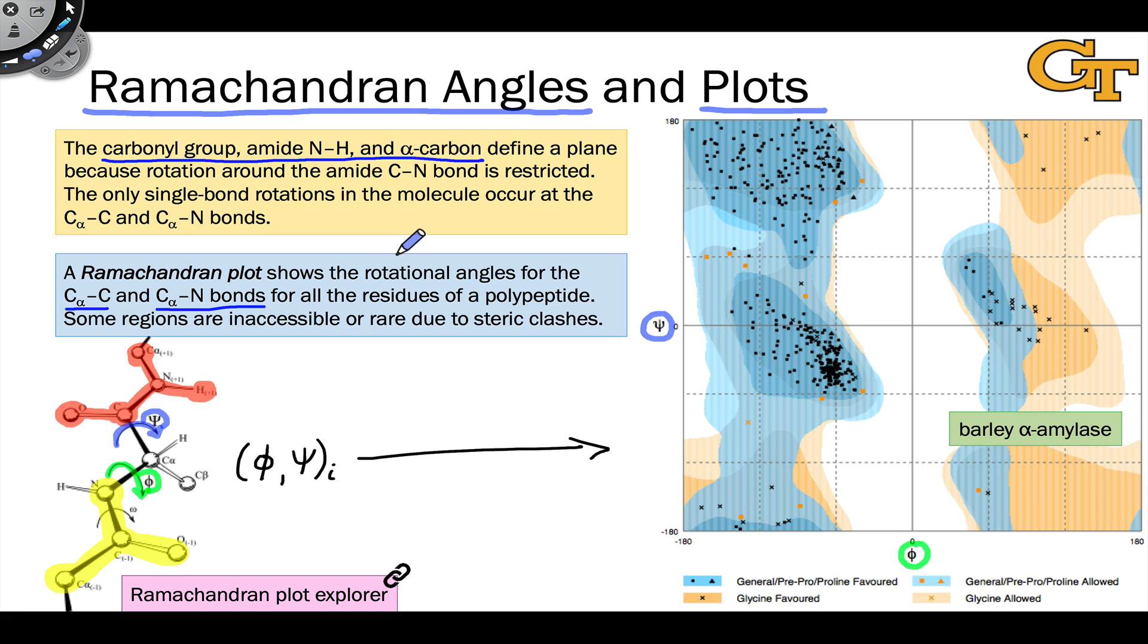We alluded to this earlier, but it's worth pointing out again that there are certain regions of the Ramachandran plot where points tend to cluster. For example, we can see one right here with a large number of points in a common region. This occurs because these regions are associated with the secondary structural elements that we've seen previously, alpha helices and beta sheets, and the residues involved in those secondary structures are going to have similar values for the Ramachandran angles.